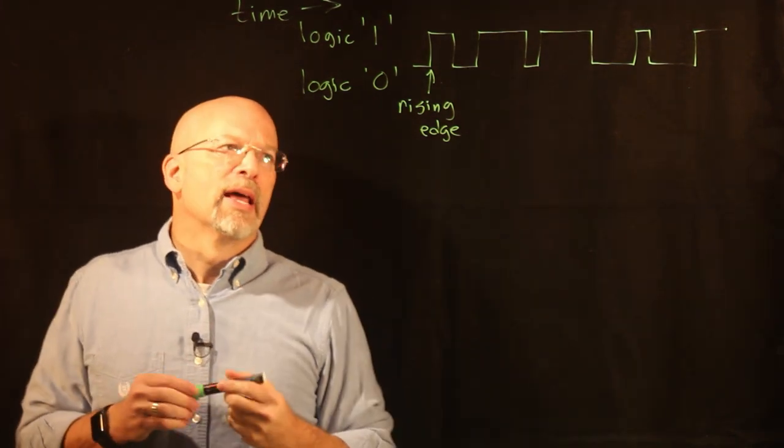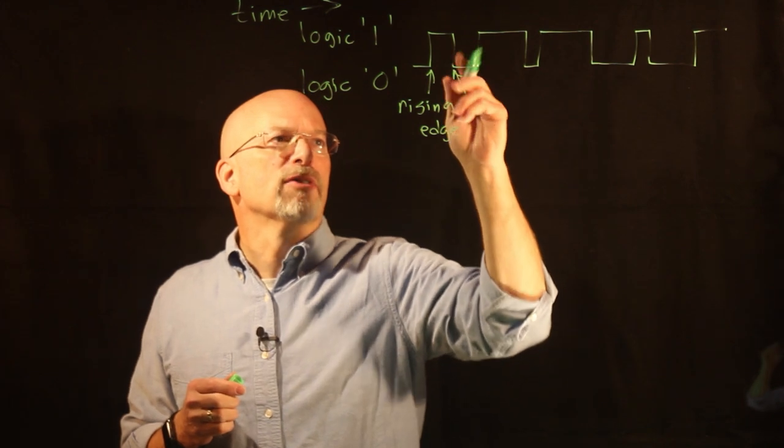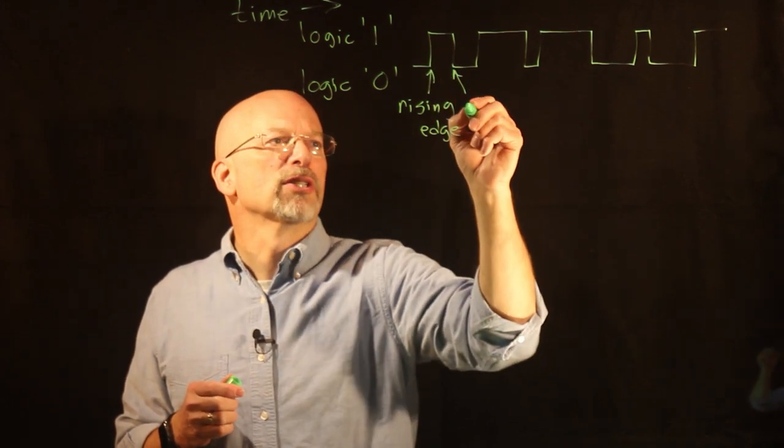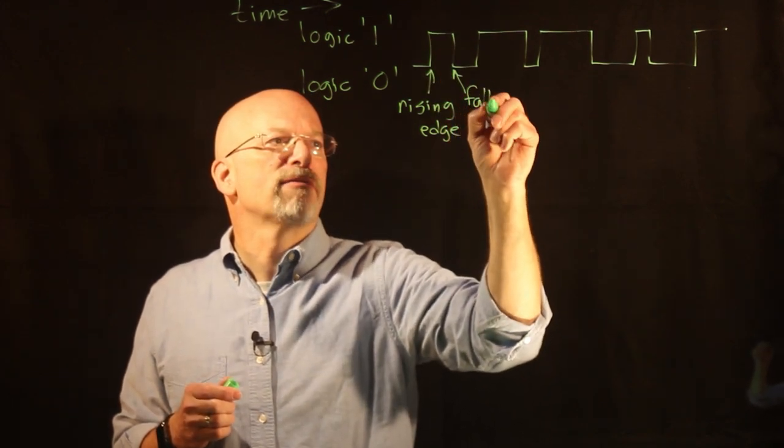Conversely, we have the transition from a logic one to a logic zero. This guy is a falling edge.